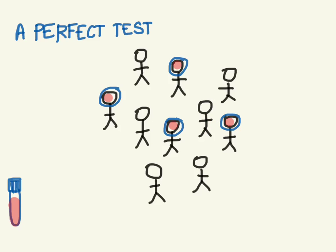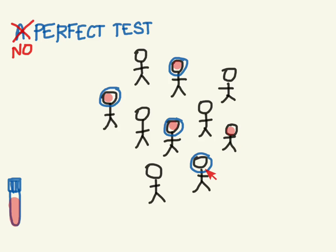In reality, there's no such thing as a perfect test, and so tests can be wrong. Here, the test failed to pick up this person who had the disease, and it erroneously picked up this person as having the disease — but in reality, they don't. So this is how most tests really are.